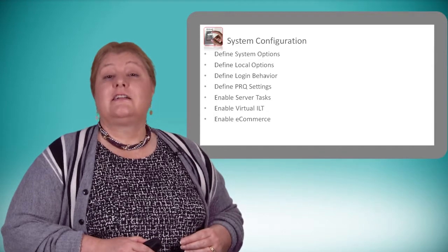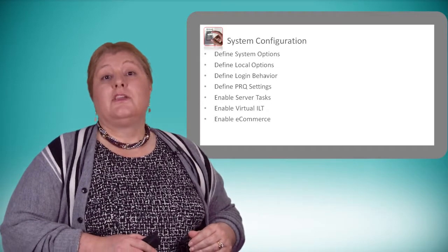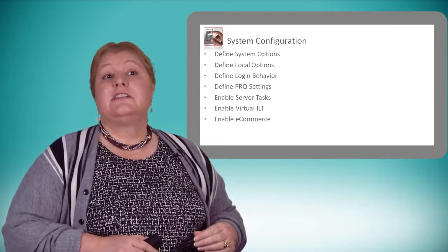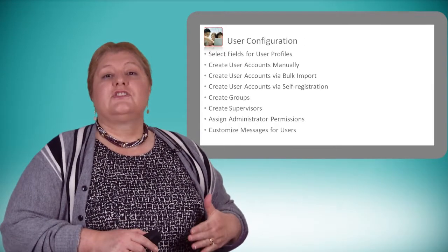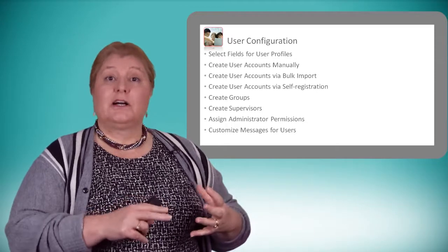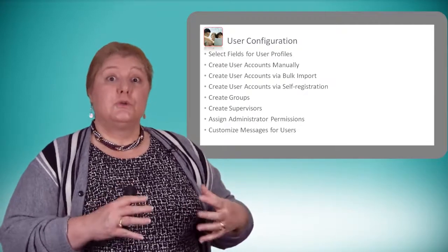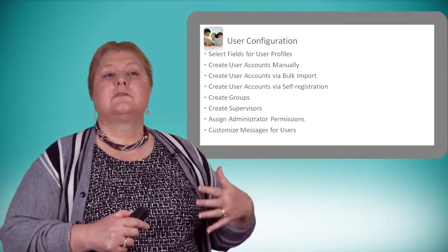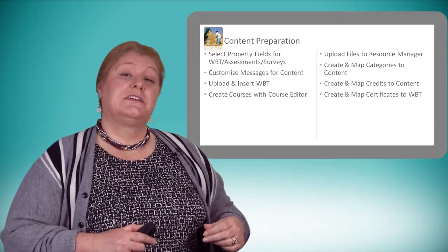We've detailed out the different tasks involved in each of those four categories, starting here with system configuration. You'll see some of the different ways we'll be using the system — for example, do we need to enable virtual ILTs? Then we move on to user configuration. This list is a little bit longer because we need to talk about group constructs, how we want people to access the system, how we're going to load users into the system. So we've got the creation of user accounts, the identities of our supervisors, messages, and that kind of thing.